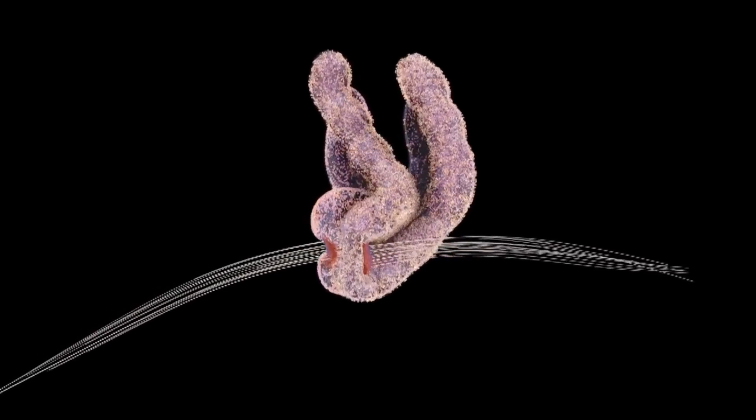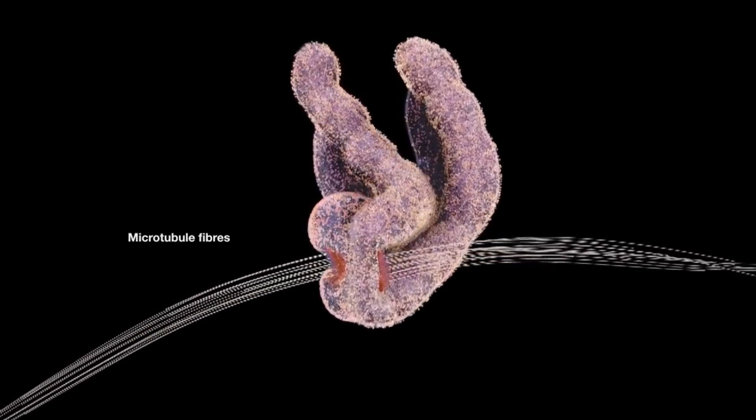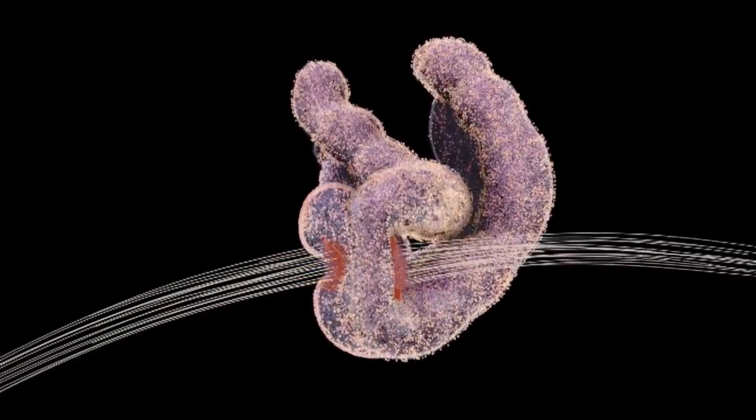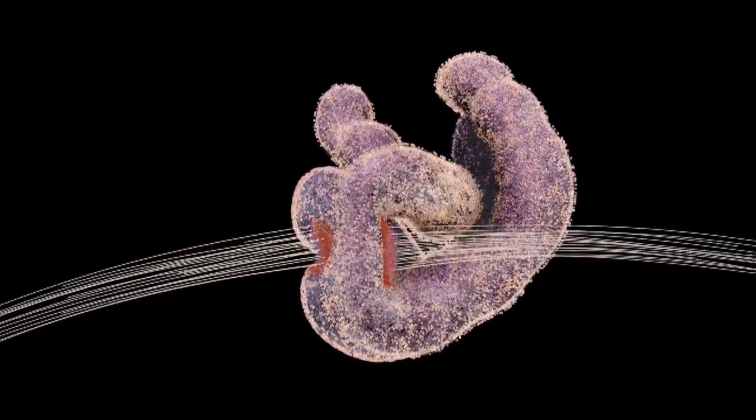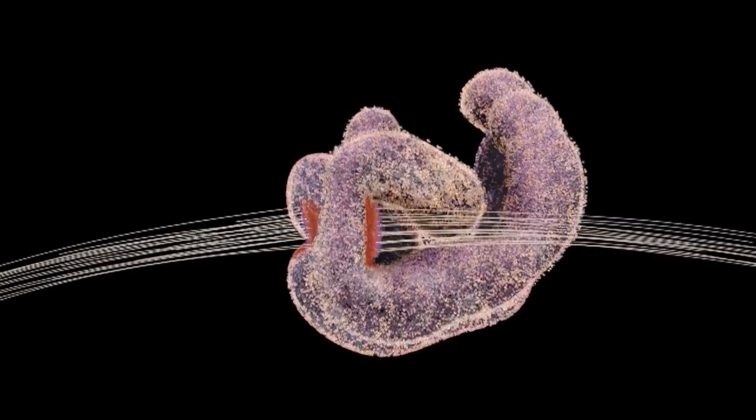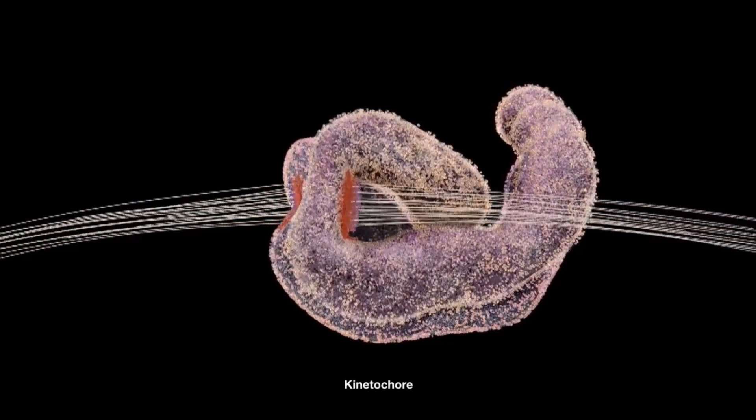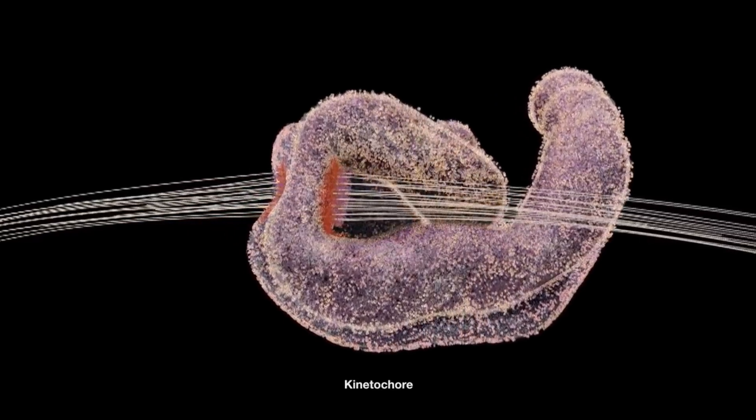Sticking out from either side are microtubule fibers from the mitotic spindle used for orienting and guiding the chromosomes to their correct positions. The red region is the kinetochore, which works as the interface between the microtubules and the chromosome.